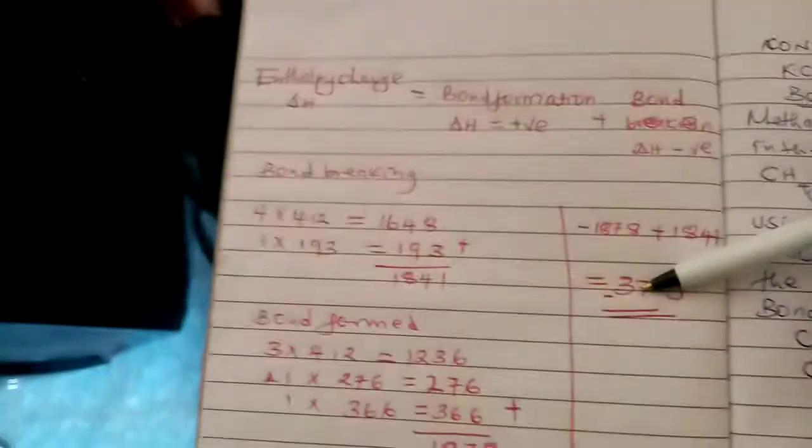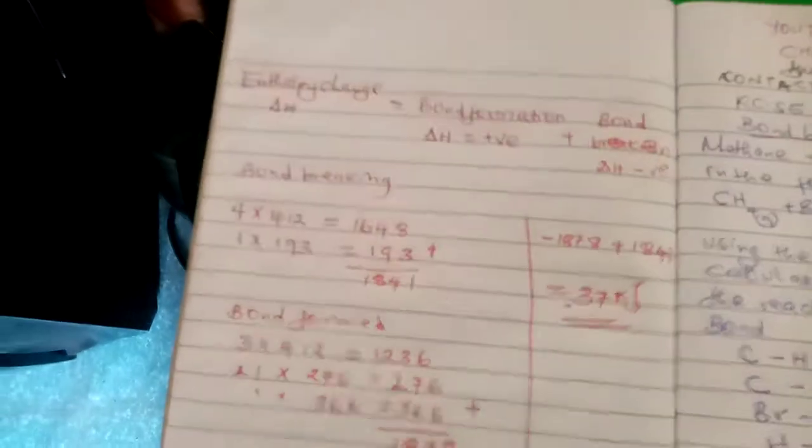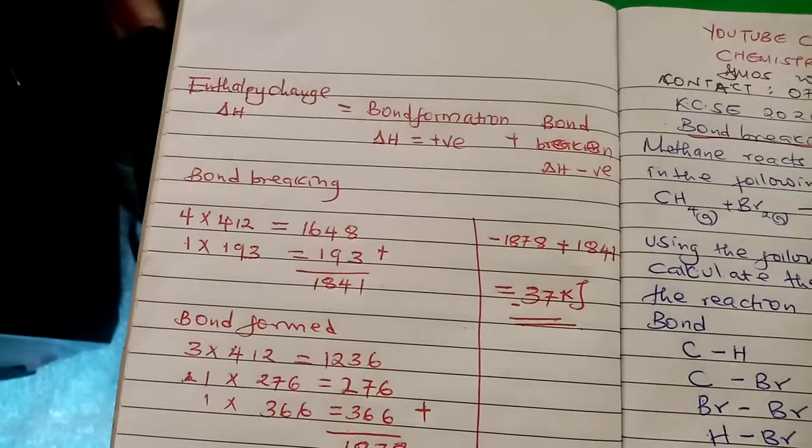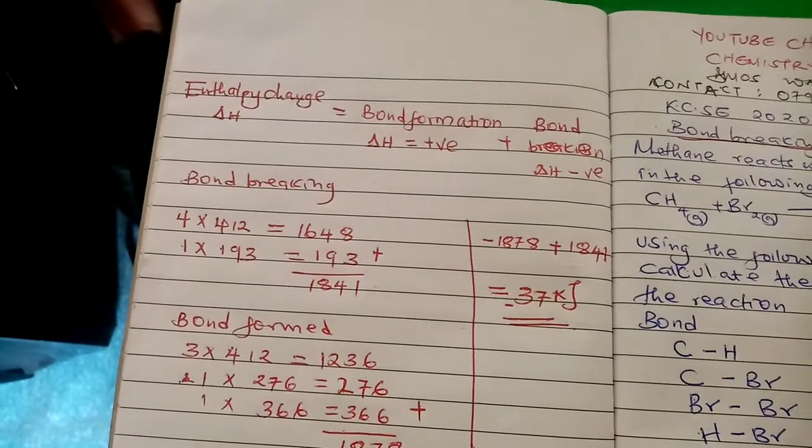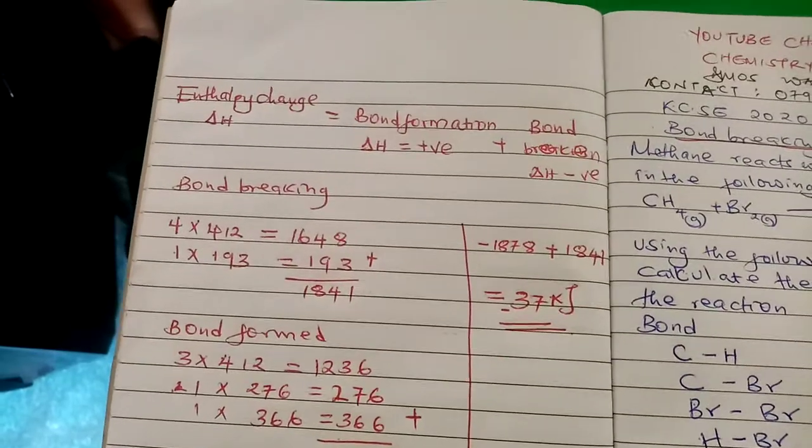Thank you for viewing. Please share, subscribe, and leave a comment. The answer is negative 37 kilojoules per mole.